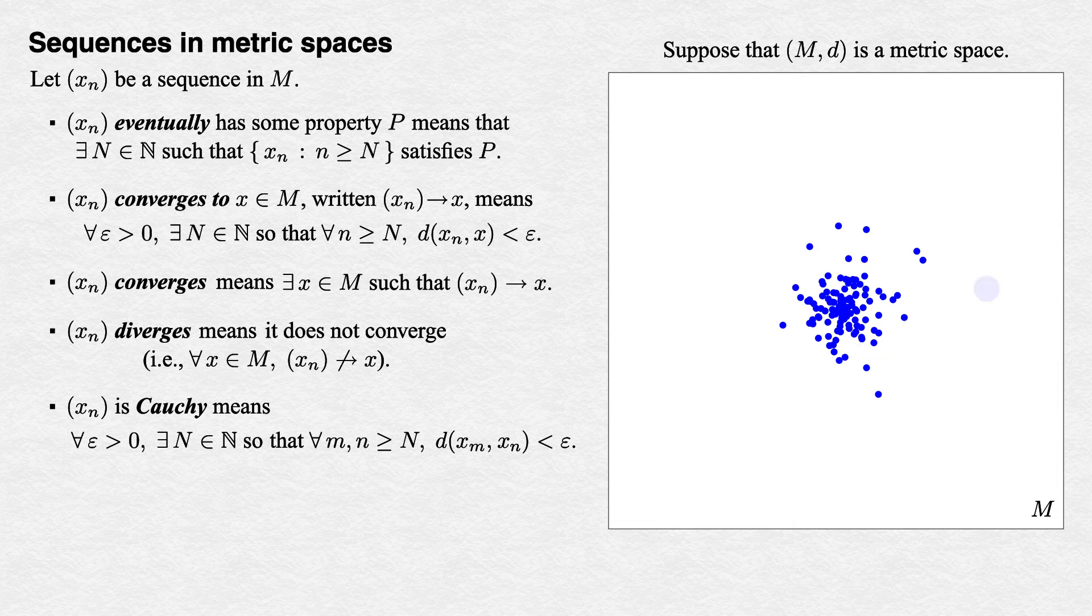Recall that this means that as we toss out more and more initial terms of the sequence, the rest of the terms cluster closer and closer to one another, without any mention of a limit. This is still the crucial difference between a sequence converging and it just being Cauchy.